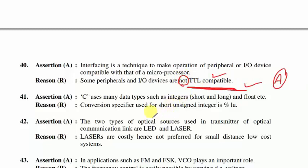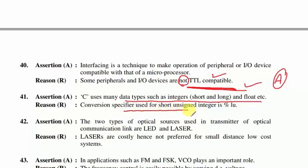Question 41: C uses many data types such as integer, short, long, and even string — true. Reason: the conversion specifier used for short integer is %LU — wrong. So option C is correct.